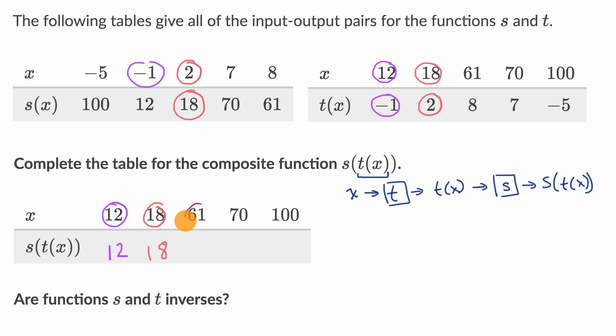So when we input 61 into t, the output is eight. Then when we take eight and we input it into s of x, or s of eight, I should say, it's going to be 61. All right, things are looking good so far.